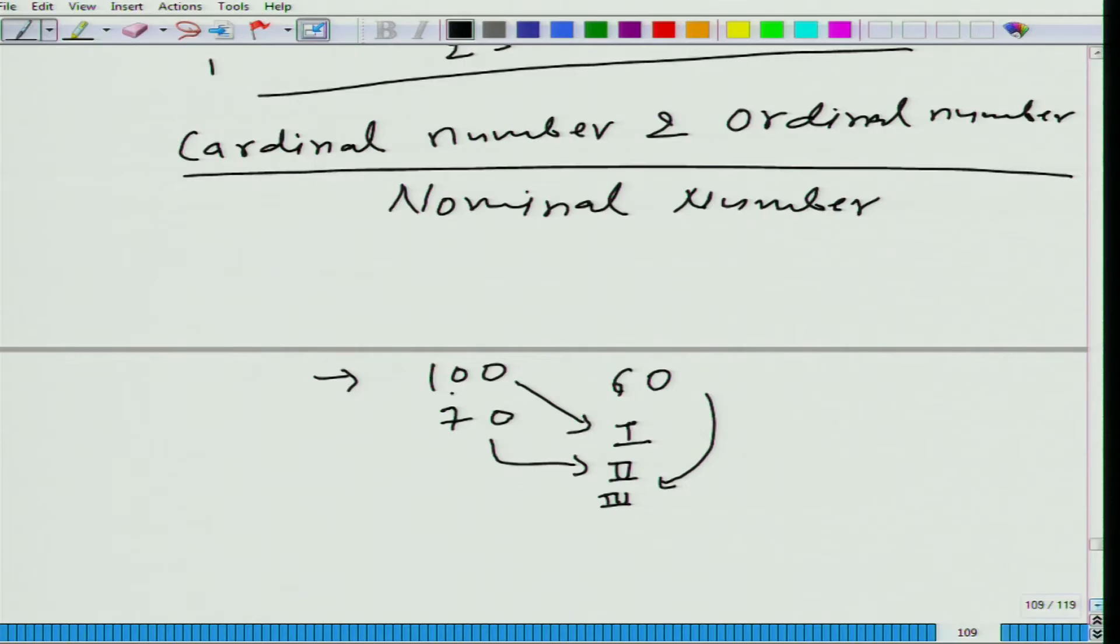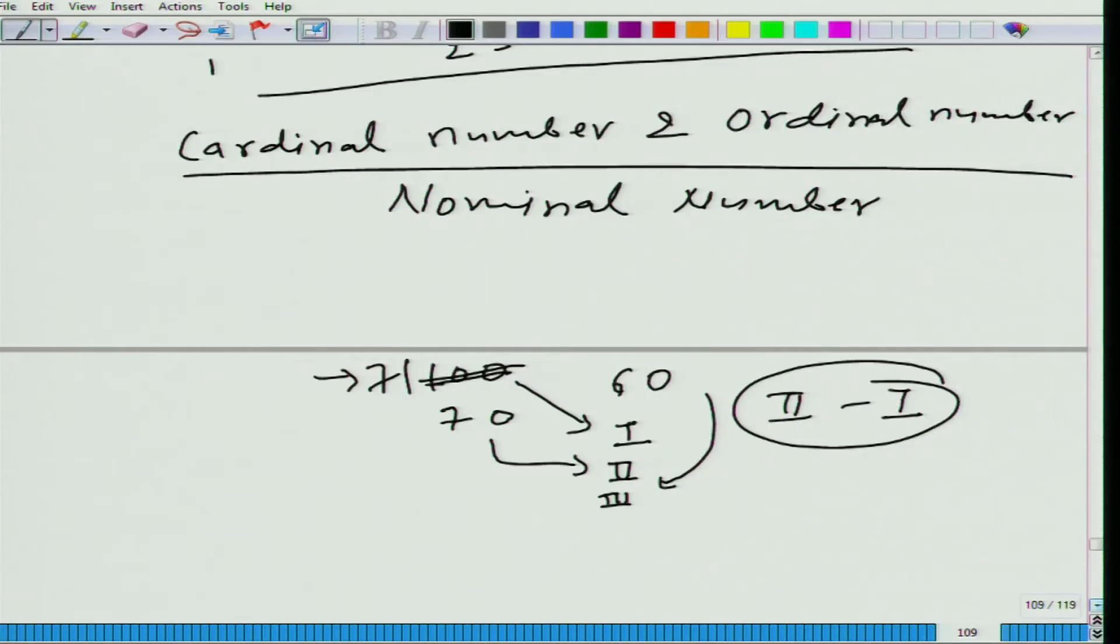It would not change. And let's say the first person, if he had received 71, what would be his rank? First. So, what it means is that second minus 1 is meaningless. It does not contain this information - what is the difference, how much is the difference? What information does it contain? It contains the relative rank - that second is lower than first but above third. That is what it says.